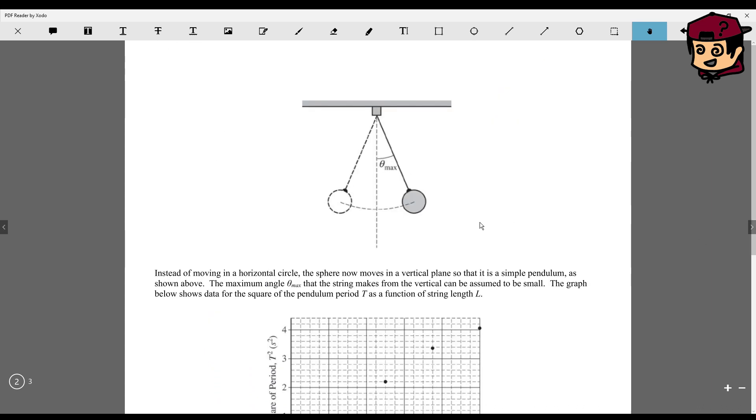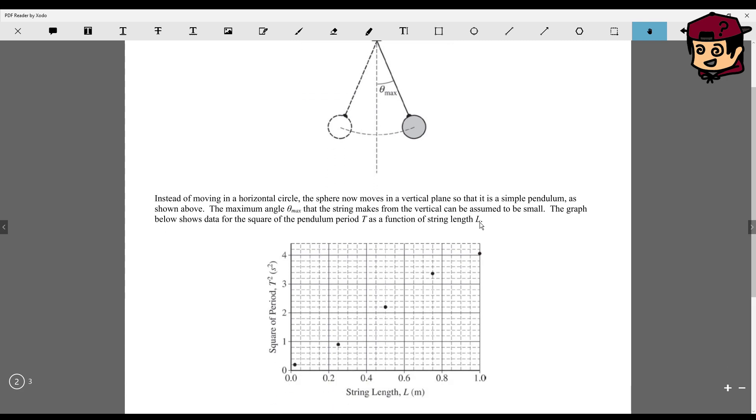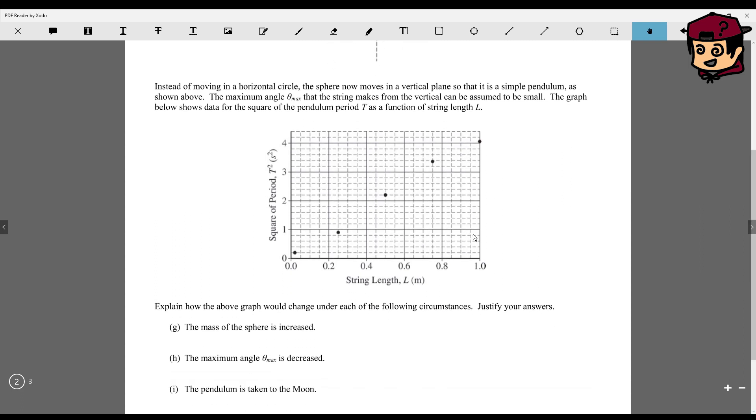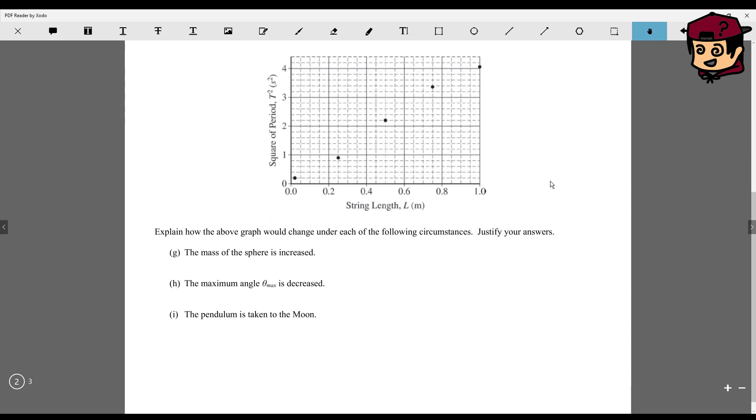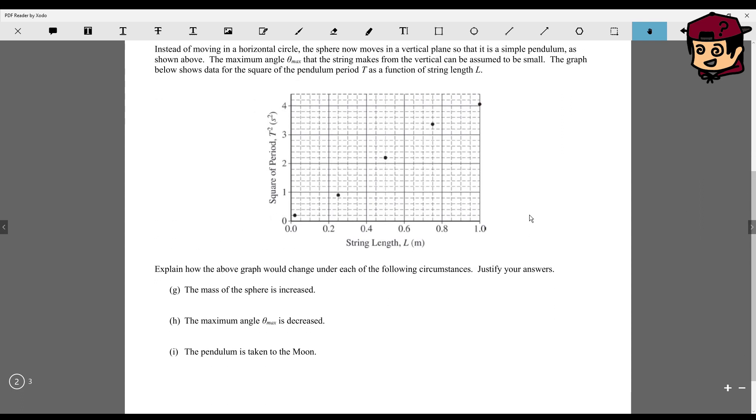Instead of moving in a horizontal circle, the sphere now moves in a vertical plane. So it's a simple pendulum as shown above. The maximum angle theta max that the string from the vertical can be assumed to be small. So here's our graph. Explain how the graph would change under each of the following circumstances to justify your answers. Well, first, we essentially have a trend line like so.